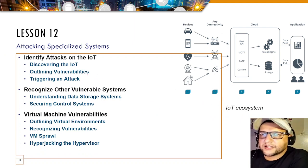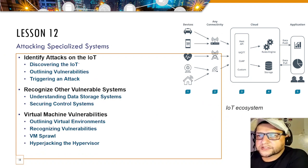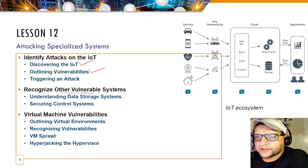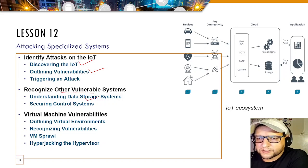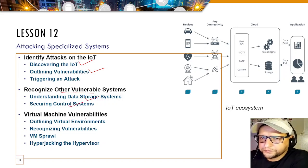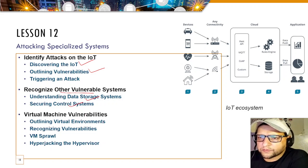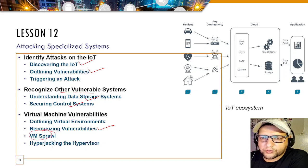Lesson 12 covers attacking specialized systems — understanding the IoT ecosystem, discovering IoT devices, outlining vulnerabilities, triggering attacks, and recognizing other vulnerable systems including data storage systems, secure control systems, and virtual machine vulnerabilities. You'll outline virtual environments and recognize vulnerabilities including VM sprawl and hyperjacking of the hypervisor.